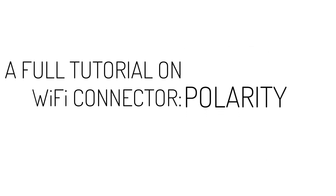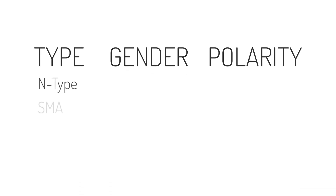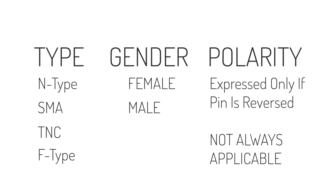We're going to get pretty specific on Wi-Fi connectors and then jump into Wi-Fi cables. The first thing we'll cover is the naming of connectors: type, gender, and polarity. Types will be N-type, SMA, TNC, and sometimes F-type. Gender will be female or male. Polarity will only be expressed if the pin is reversed.